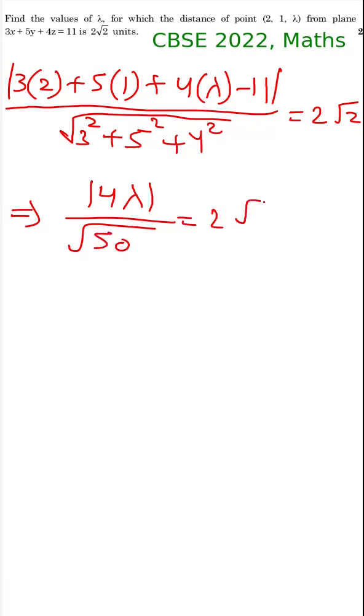From here we can take 4 outside and this will be 4|λ| equals 2√100. And √100 will become 10.